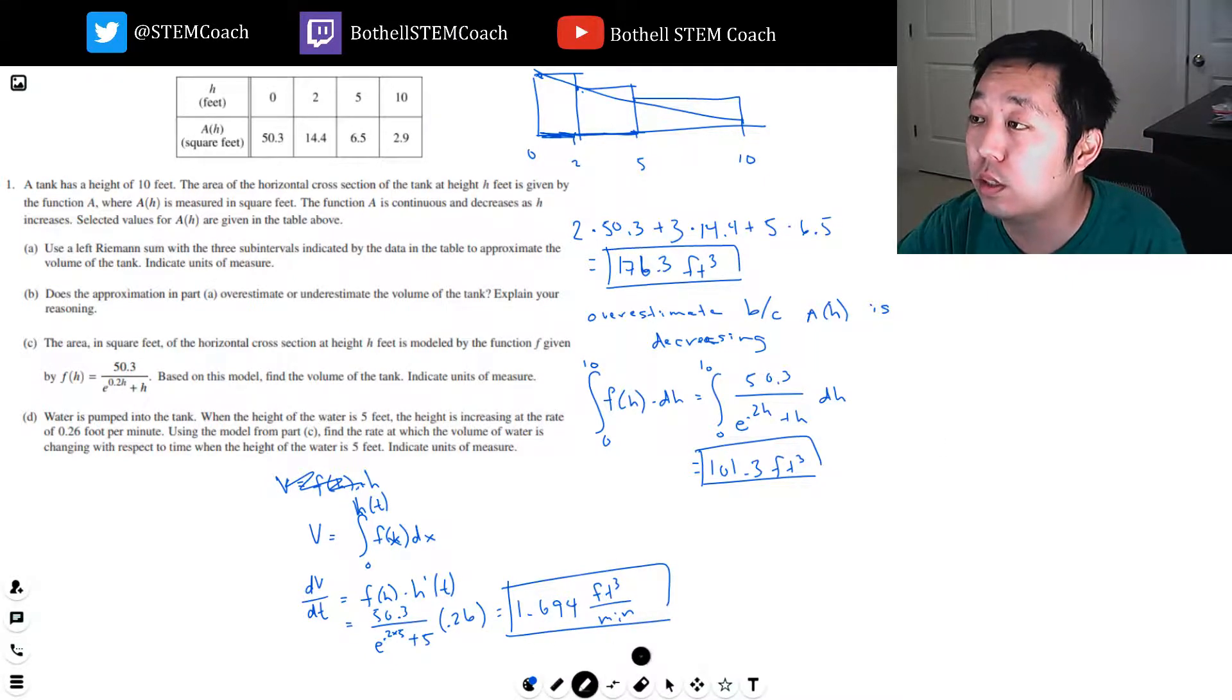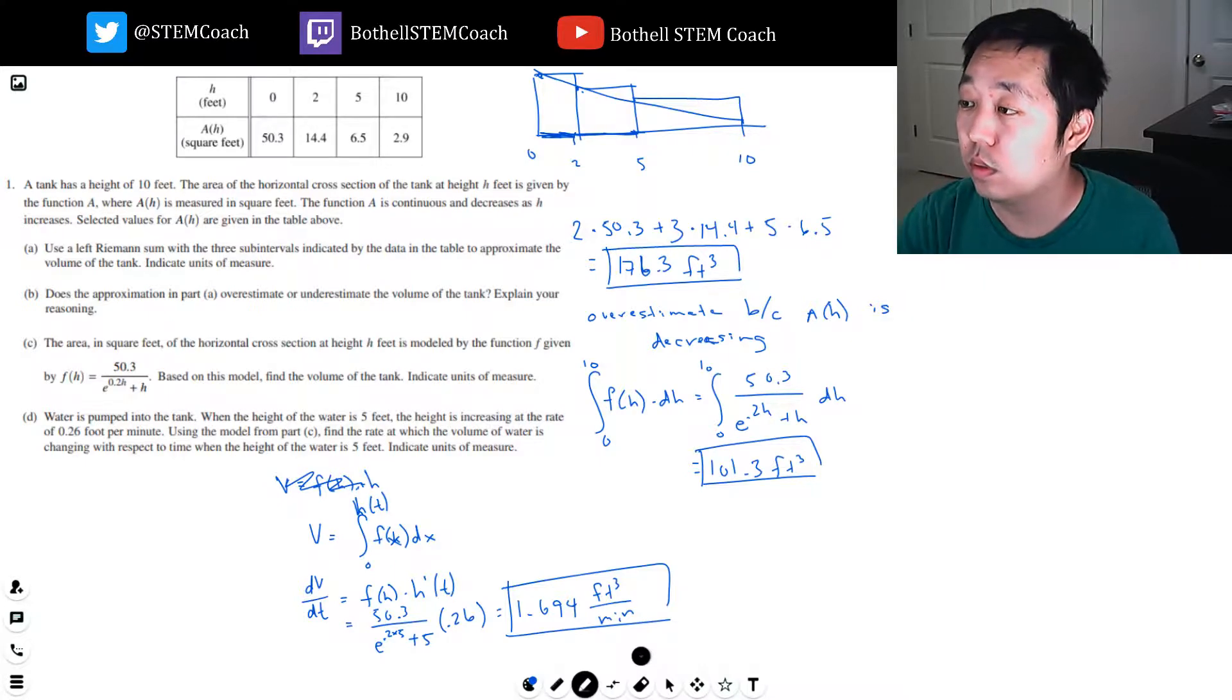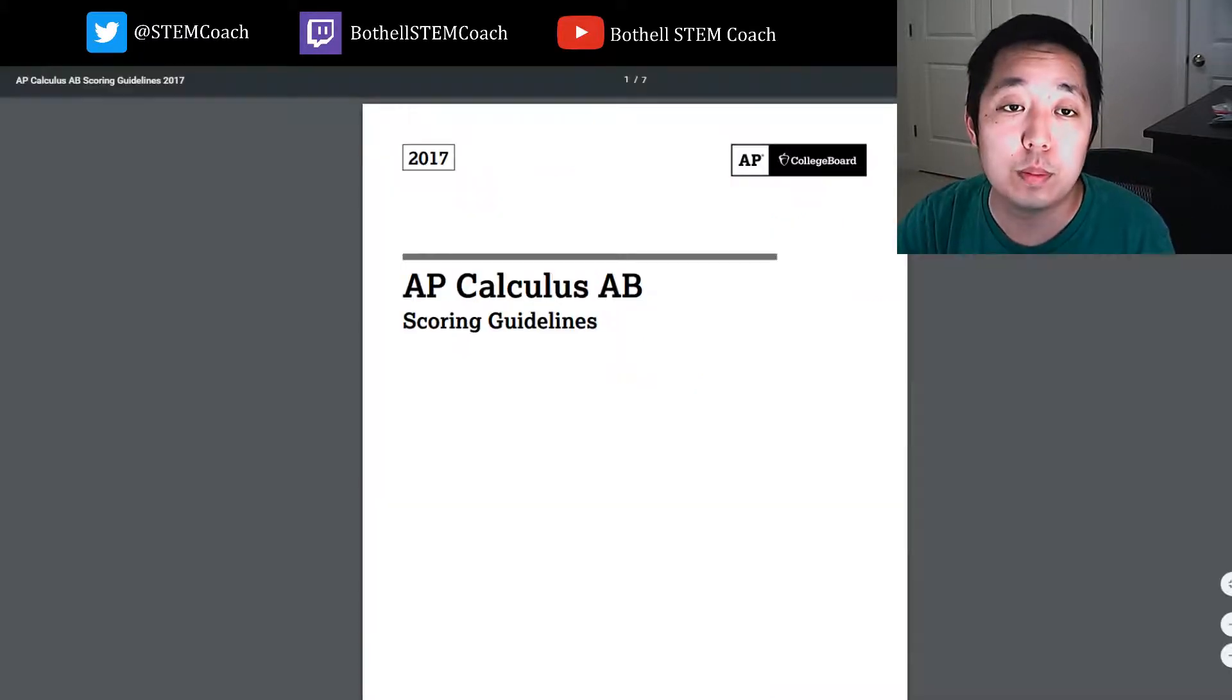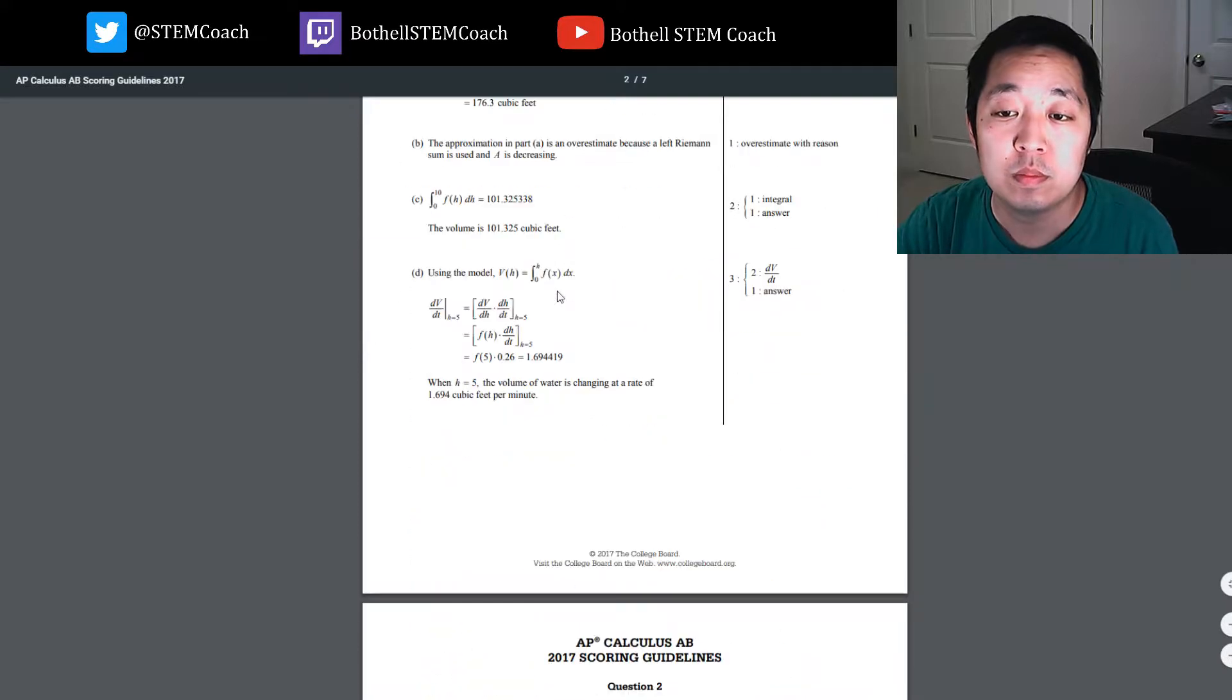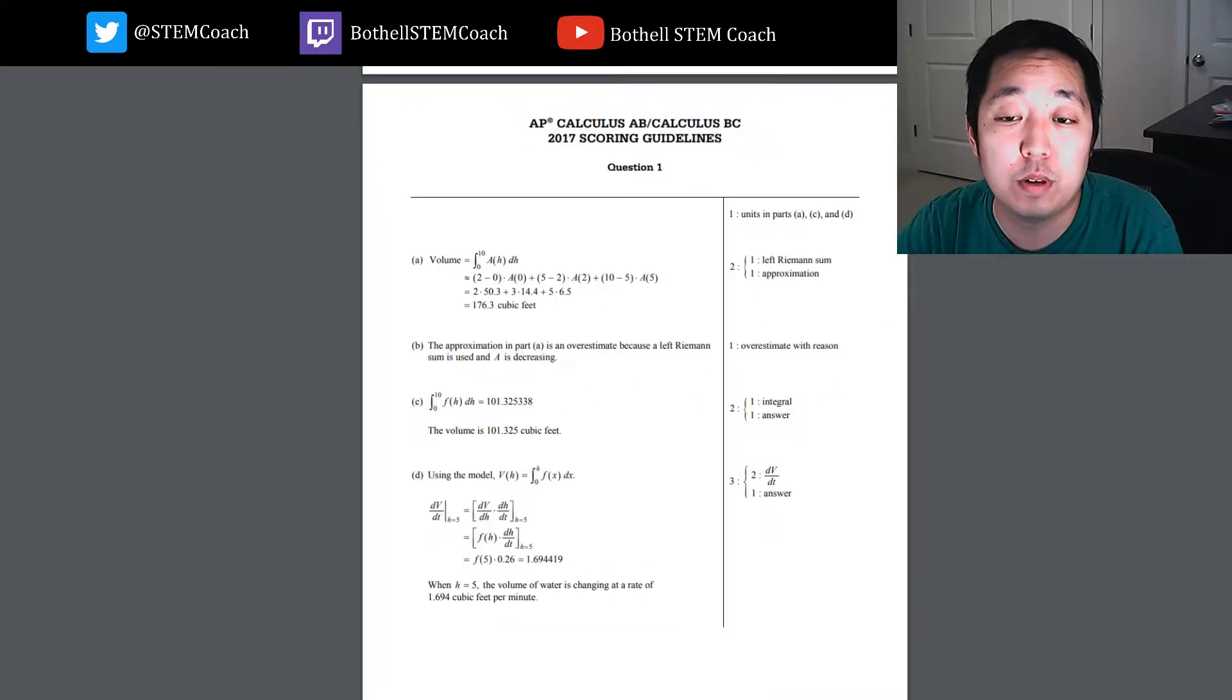How did I do? I don't have it prepared. Let's see. AP Calculus 2017 free response solution scoring guidelines. Let's pop this bad boy up and see how we did. First one. Volume. 176.3. You get a point for the sum and the approximation. 176.3. Perfect.